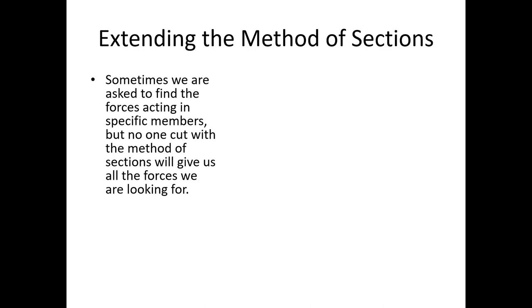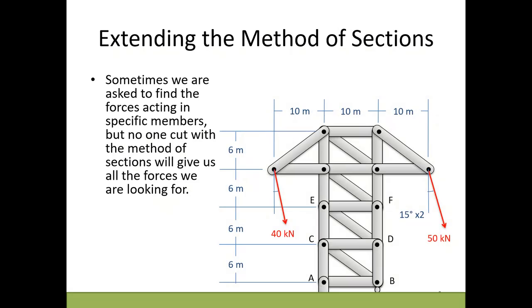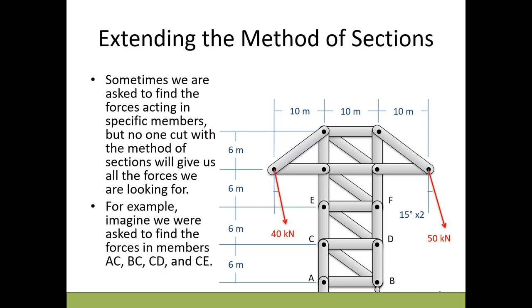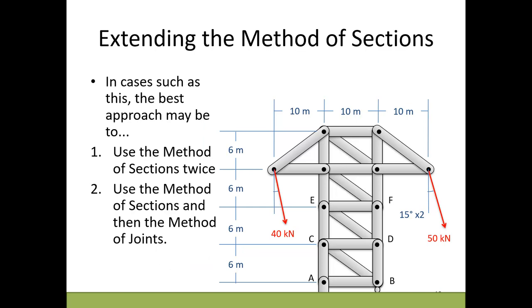The method of sections can be extended when no single cut is sufficient. For example, with a power line gantry structure, if asked to find forces in members AC, BC, CD, and CE — essentially everything around joint C — no single cut can pass through all of those members without exceeding three. In that case there are two approaches: use the method of sections twice, or use the method of sections followed by the method of joints.